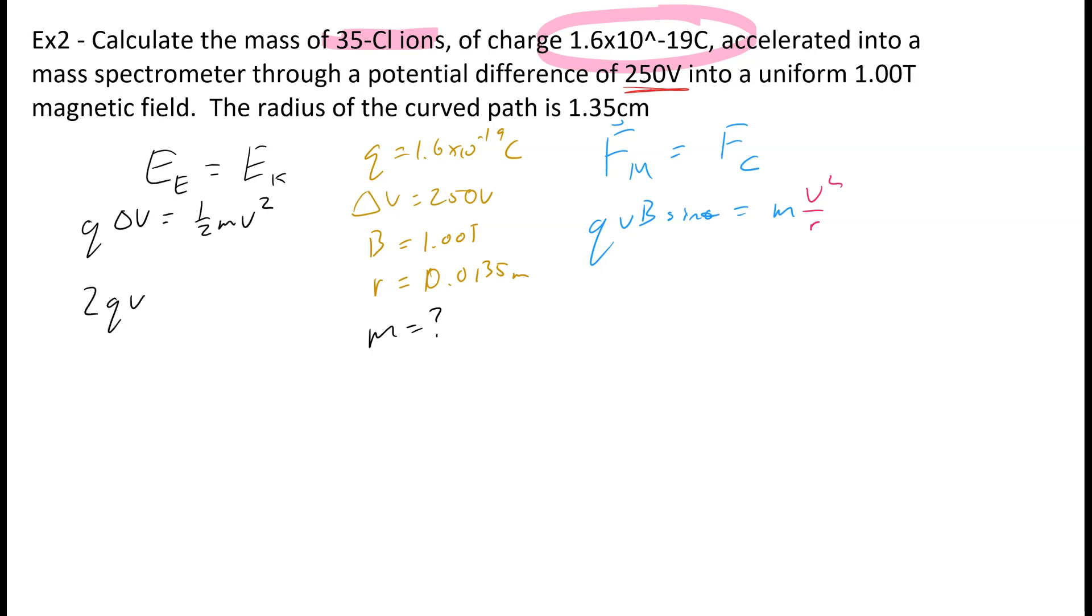So it's going to become 2Q delta V, which is voltage in this case, over m square rooted is V. That's the rearrangement right here.